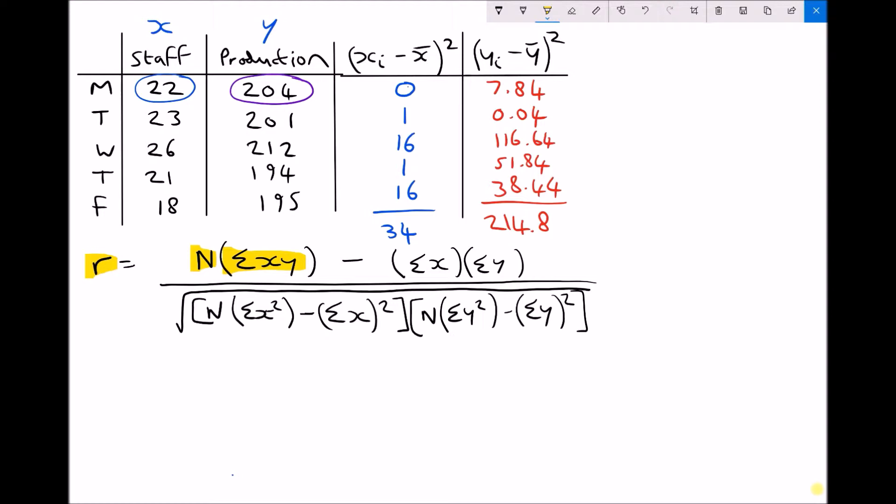Let's create a new column which is x times y. This column is x, y. And all we're going to do is multiply our number of staff by our production for each of those days. So Monday we have 22 already circled times 204 also circled. Our x and y values multiplied together. That gives us 4488.